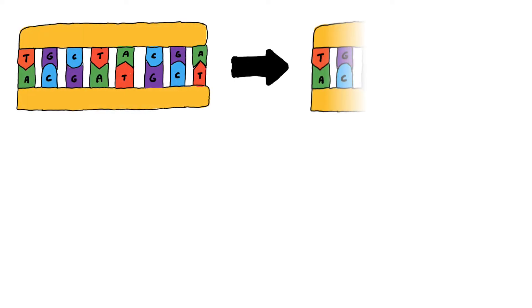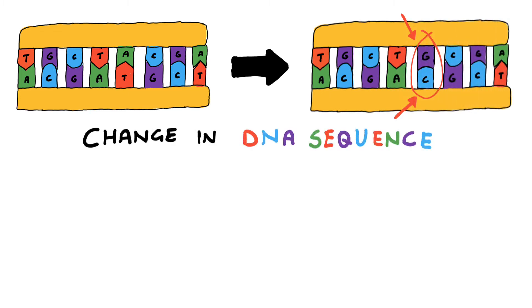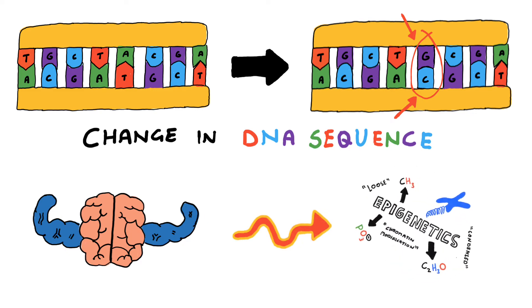Phenotypic traits were thought to be controlled by DNA sequences, where mutations between base pairings could alter gene expression. However, as our knowledge of genetics grew, we developed an understanding of a phenomenon called epigenetics.